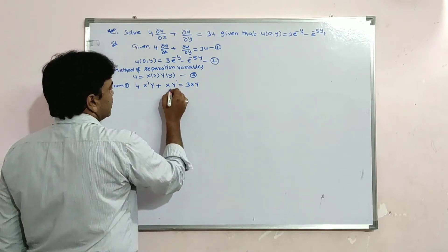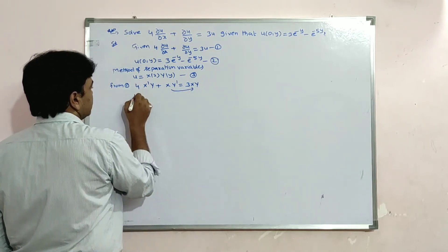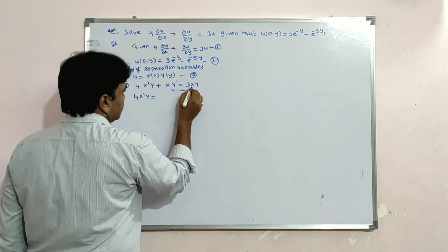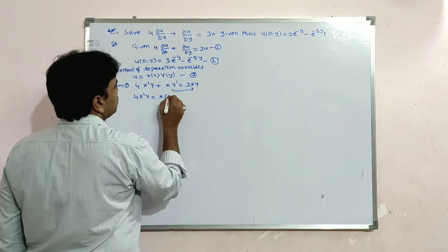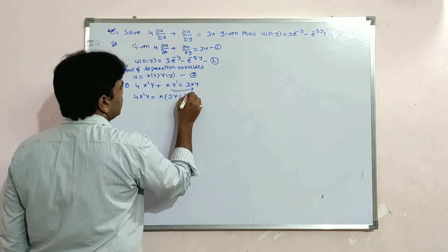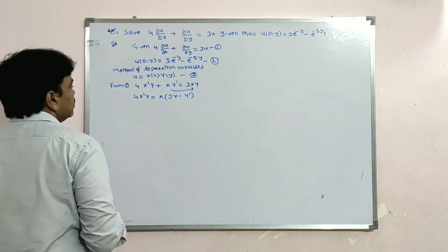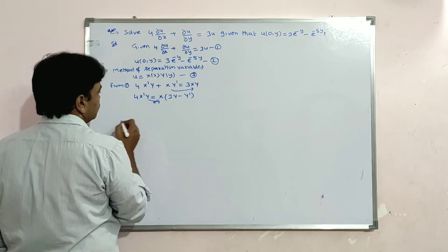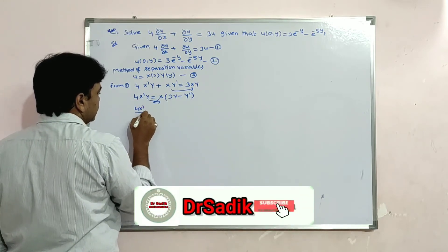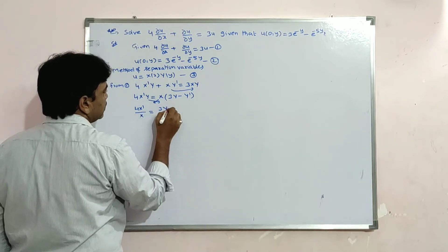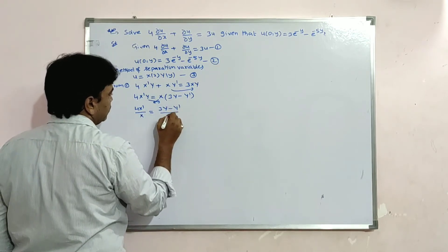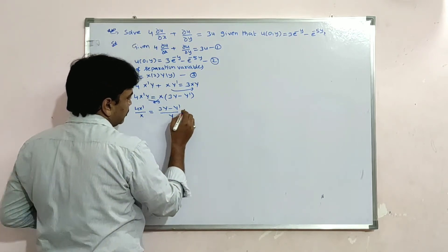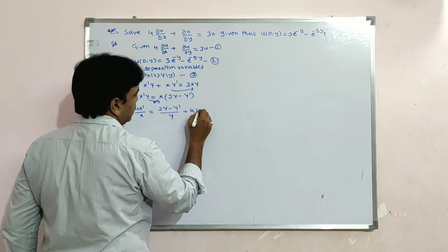Transposing and grouping: 4·X'·Y = X·(3Y − Y'). Dividing both sides: 4X'/X = (3Y − Y')/Y. Since both sides depend on different variables, they must equal a constant k.